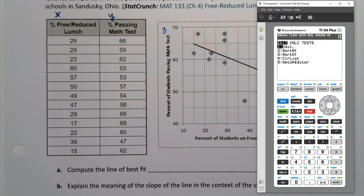Then stat again, calculate, and it's number 4, linear regression, ax plus b. Don't worry about number 8, although you could do number 8 if you wanted, but let's do number 4. So L1, L2, and go down to calculate, and there you have it.